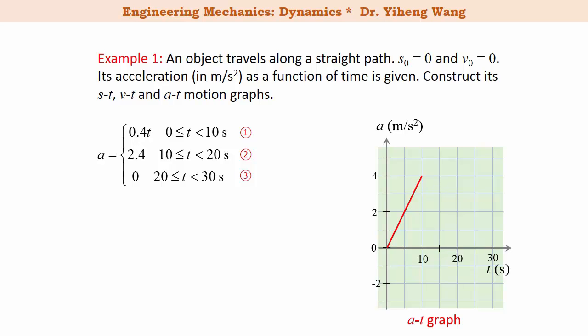For the second time period from 10 to 20 seconds, we sketch the second equation a equals the constant 2.4, which is a horizontal line on the graph. For the last time period, 20 to 30 seconds, we sketch a equals the constant 0, again a horizontal line. You can connect the time periods with dashed lines if you wish, but keep in mind the graph of the function does not include dashed lines. That completes the a-t graph, showing how acceleration changes with time.